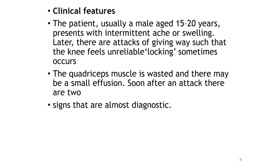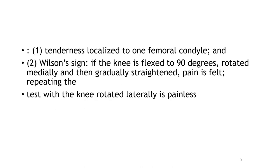Clinical features: the patient is usually between 15 and 20 years old, presenting with intermittent pain, swelling, locking, quadriceps muscle atrophy, and effusion of the knee. The diagnostic test is the Wilson test: the knee is flexed to 90 degrees and the foot is internally rotated, then the knee is gradually straightened. The patient will feel pain on straightening; if the maneuver is repeated with external rotation, the pain is not as severe.